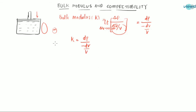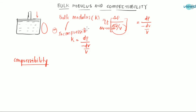Now what is compressibility? Compressibility is the inverse concept of bulk modulus. Bulk modulus shows how incompressible the fluid is — if the bulk modulus is high, it requires very high pressure to produce a unit volumetric strain, which means it is highly incompressible. Whereas compressibility shows how compressible the fluid is. Compressibility is equal to 1/K, which is 1 divided by bulk modulus.